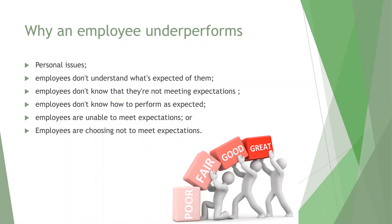The objective should always be to find a solution that works for both of you. In the example of an employee arriving late, it might be that you're able to adjust their standard hours while they work through the issue. Another reason for underperformance is that employees don't understand what's expected of them. Research from Gallup suggested that only about half of employees strongly agree that they know what is expected of them at work.